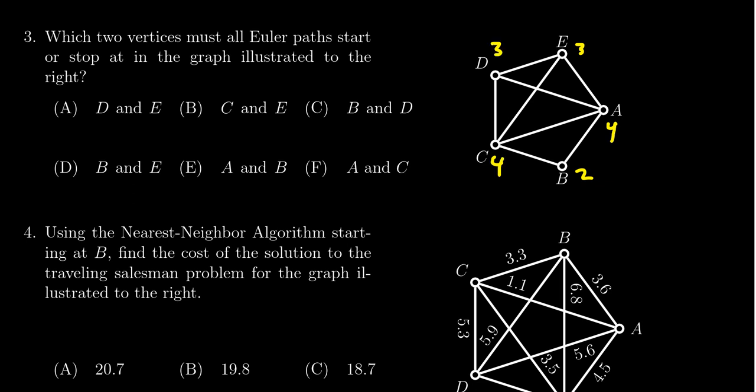Euler's theorem tells us that every Euler path must start and stop at the two odd vertices. We have exactly two odd vertices, D and E.